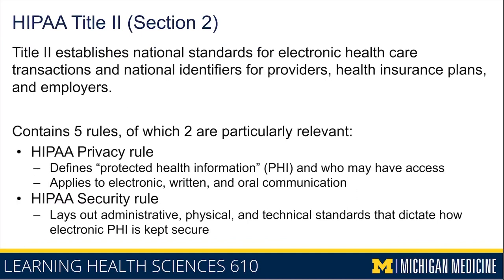Two of the five rules in Title II are particularly relevant. The first is the HIPAA Privacy Rule, which defines what is considered protected health information (PHI) and who may have access to it — applying to electronic, written, and oral communication. The second is the HIPAA Security Rule, which lays out administrative, physical, and technical standards dictating how electronic PHI is to be kept secure, such as encryption requirements and storage safeguards.